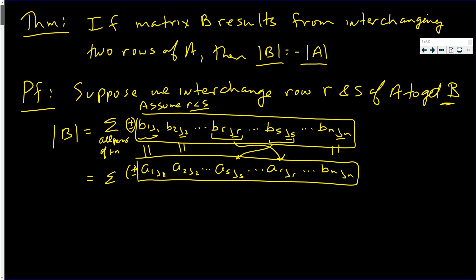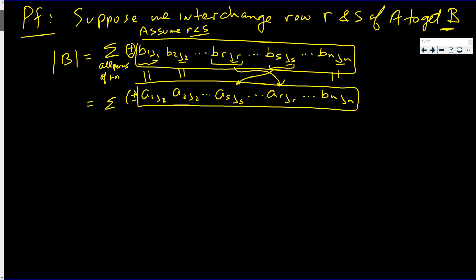So now we know up to sign that they're equal — and this expression is actually the determinant of A, though that equal sign isn't valid yet. We just don't know about the sign. So let's look at this more closely.